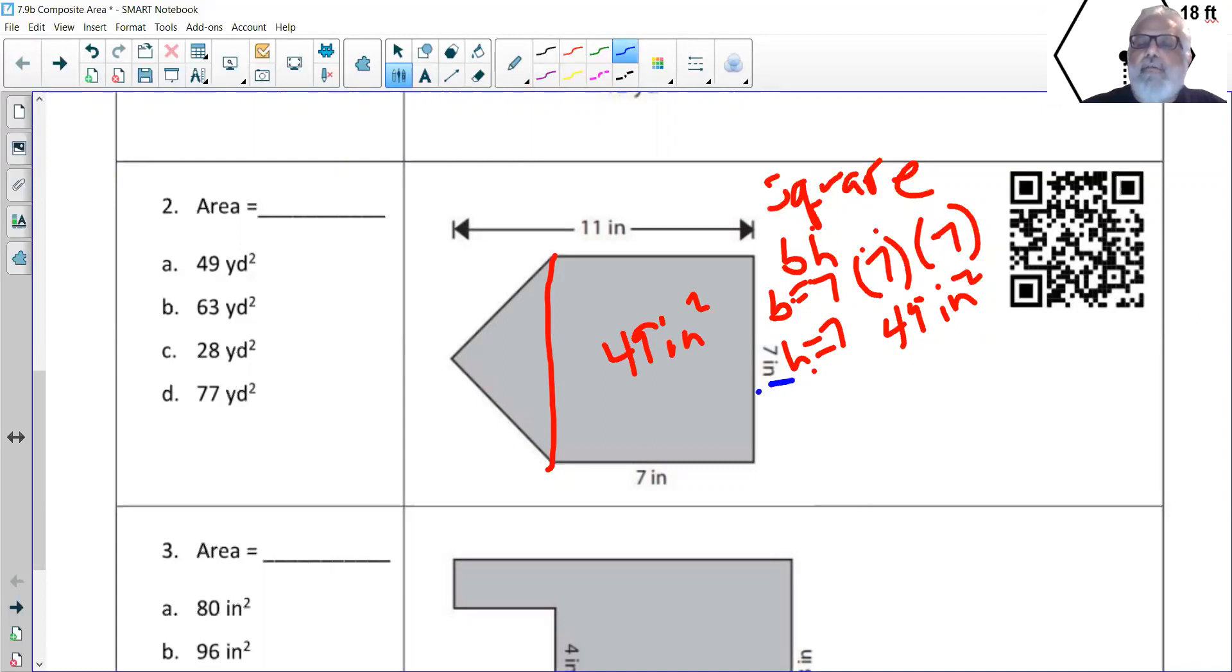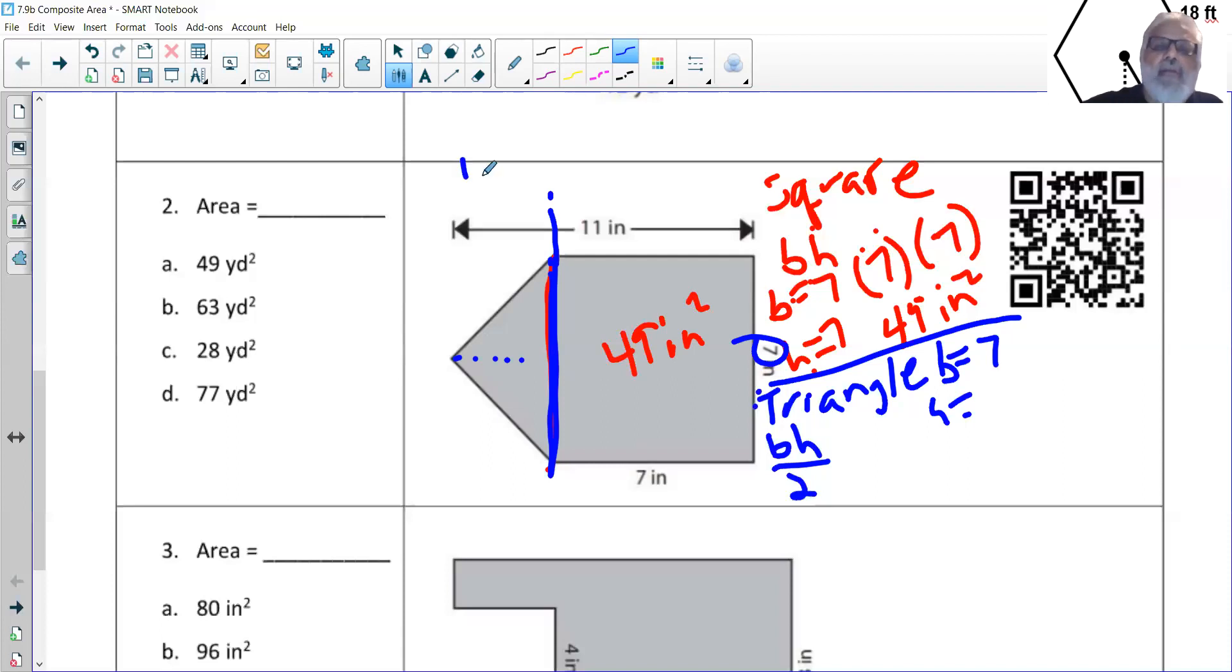Now we're gonna do the triangle part. And the triangle is gonna be base times height divided by two. Now if you look at the triangle, the base is gonna be the same as this guy over here, right? Yeah. So my base is equal to seven. The height is what's tricky. What do you think the height is? Wouldn't it still be seven? Well, this - oh no, no, no, no. Yeah you're gonna - it's four. There you go. You do the 11 minus seven and you're gonna get four. So that means the height is four.